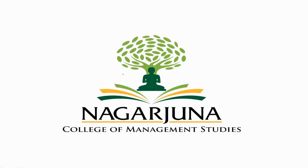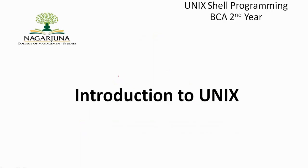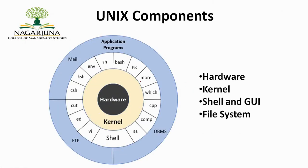Welcome to the channel. In this video, I shall be discussing the Unix components. The Unix operating system consists of three basic layers: the kernel, the shell, and the file system. Apart from these three basic layers, there is one more innermost layer called hardware.